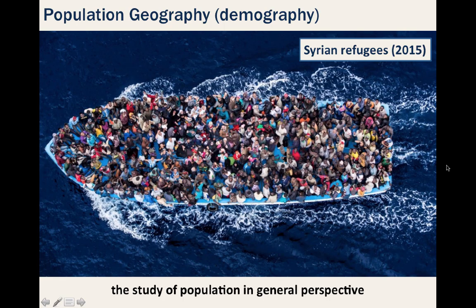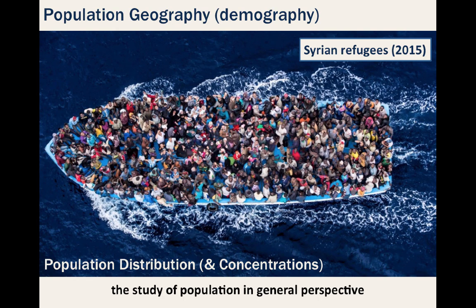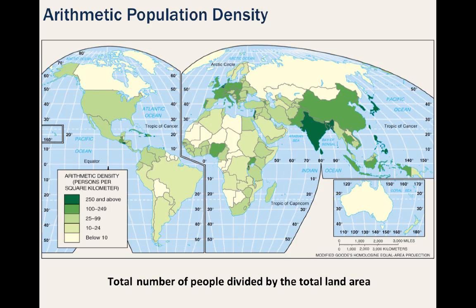Of particular importance is population distribution and concentration, which is not evenly dispersed across places. We need to look into a little vocabulary. First off, arithmetic population density is the total number of people divided by the total land area.